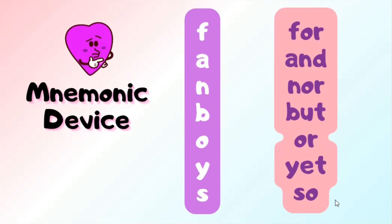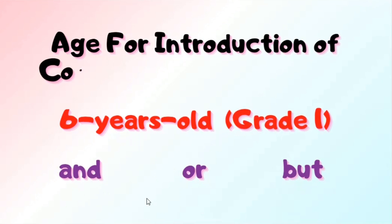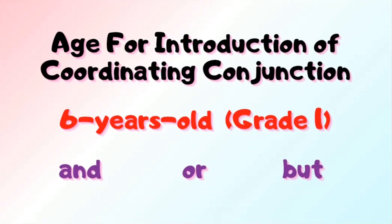These are the coordinating conjunctions, but the most common ones are 'and,' 'or,' and 'but.' When should we introduce this to children? If your kid is a first grader or six years old, you can introduce coordinating conjunctions. I would suggest introducing them in a multi-sensory way — the link to that video is in the description box. 'And' is used to give more detail, 'or' is for choices or options, and 'but' shows contradiction.